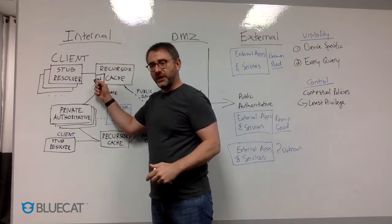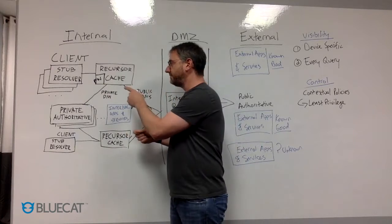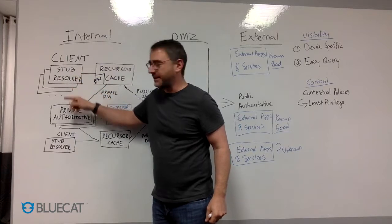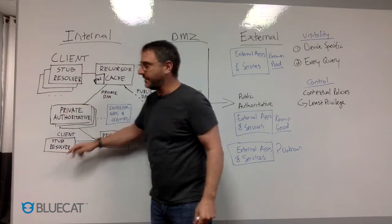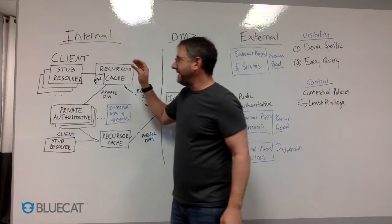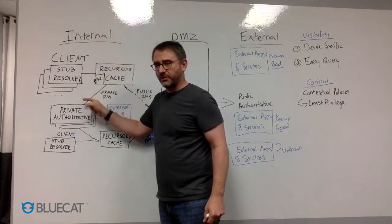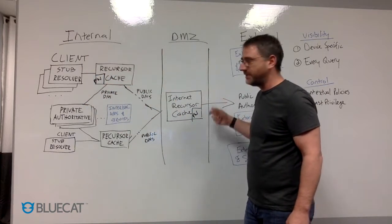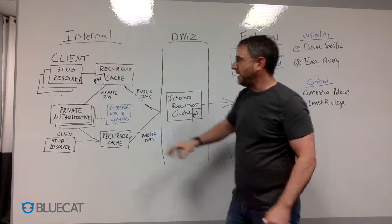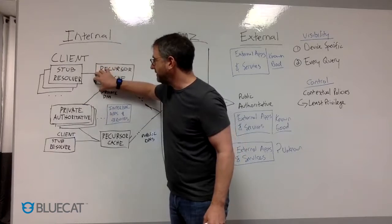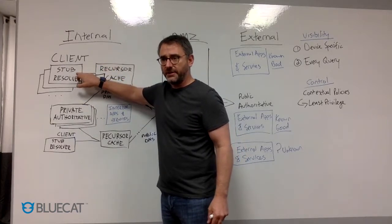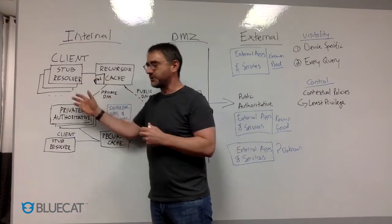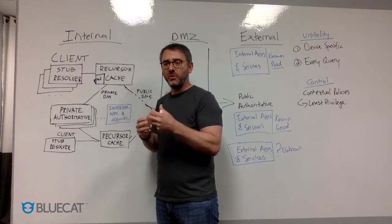Device-facing DNS firewalls allow us to, one, gain visibility to every single query from every single client, no matter where they are in the enterprise. Two, ensure that we see every single query, as opposed to only the queries that make it through the cache servers. And very importantly, three, allow us to apply controls right where those clients are, so that those controls can include the context of what types of devices those are, what sort of users those are, and what they should be doing.